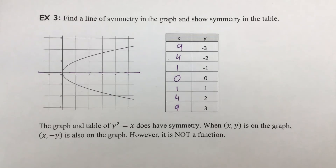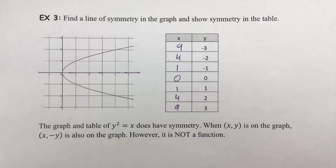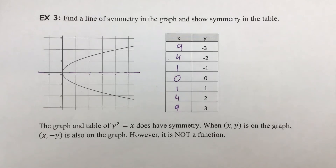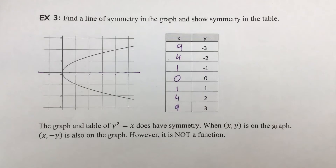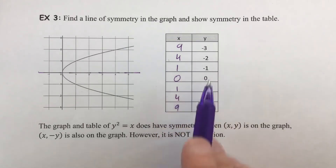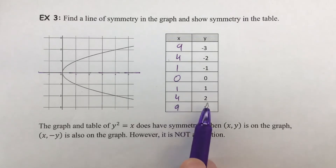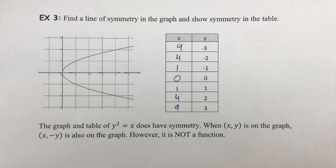It is noteworthy to say that for every coordinate (x, y) that is part of the graph, you are also going to have (x, −y). As an example, suppose we take the coordinate (4, −2). If you have that as a coordinate, then you will also have 4 and the opposite of that number — so you get (4, 2). That's something very particular to this graph because we have a line of symmetry at the x-axis.